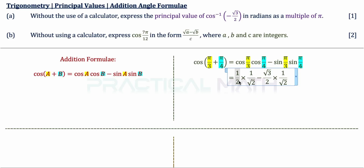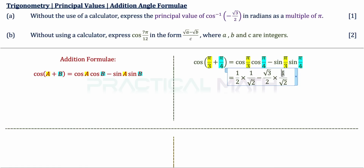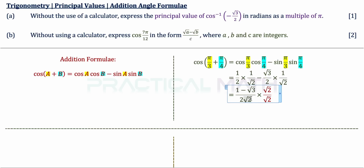Evaluating with special angles: cos(π/3) = 1/2, cos(π/4) = 1/√2, sin(π/3) = √3/2, and sin(π/4) = 1/√2. Multiplying throughout gives (1 minus root 3) over 2√2. Since there is a root 2 in the denominator, we rationalize by multiplying numerator and denominator by root 2, giving our final answer.